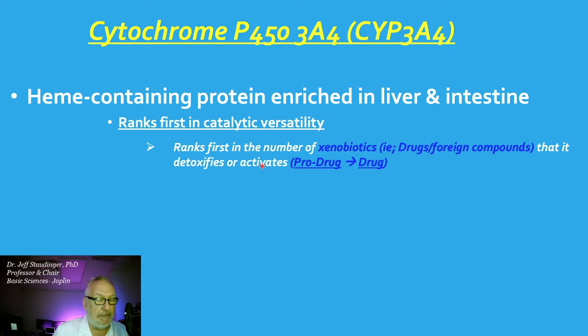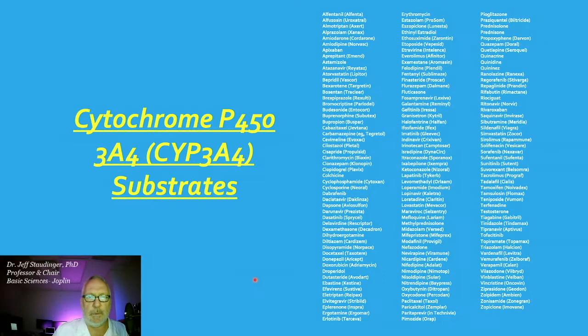CYP3A4 and carboxylesterase in particular are enzymes that convert pro-drugs into drugs. CYP3A4 has numerous substrates — it's a very prolific enzyme with a broad substrate profile.